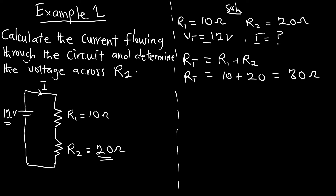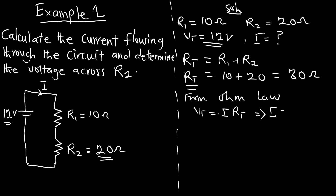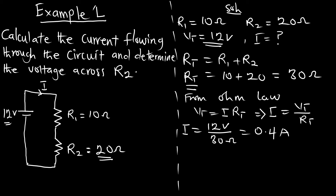Now we have total voltage and total resistance. From Ohm's law, VT equals IT times RT, which implies that IT equals VT over RT. The current flowing through the circuit is 12 volts divided by 30 ohms, which gives us 0.4 amperes. Therefore, the total current IT flowing through the circuit is 0.4 amperes.